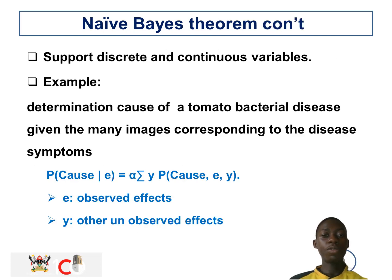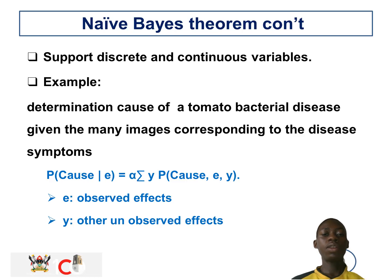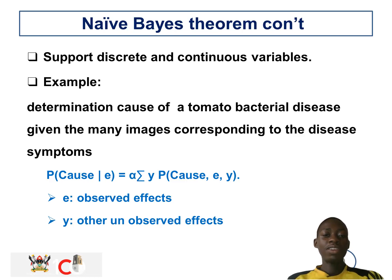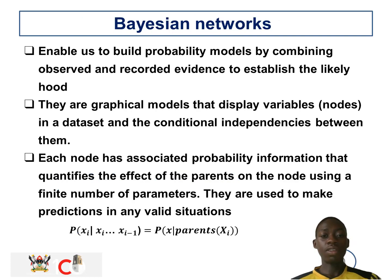Continuing with Naive Bayes theorem, we look at an example where we are going to determine the cause of tomato bacteria given the many images corresponding to the disease.